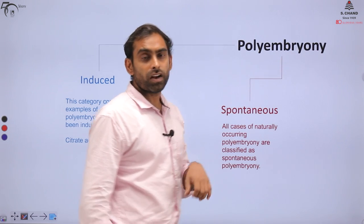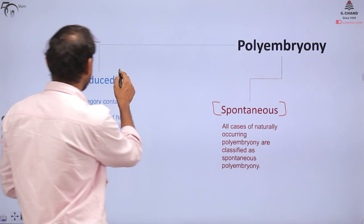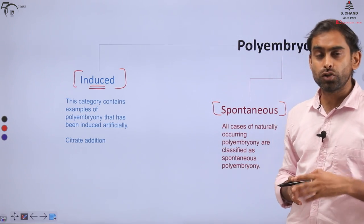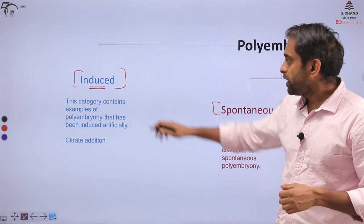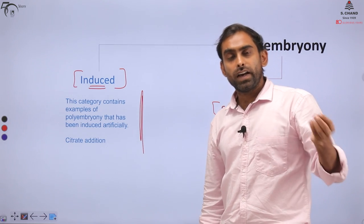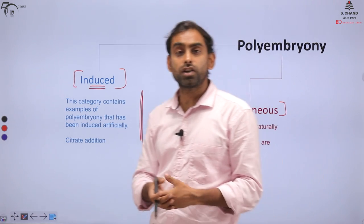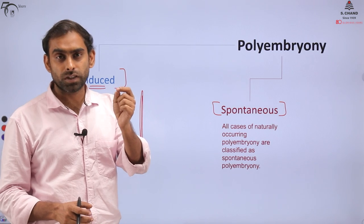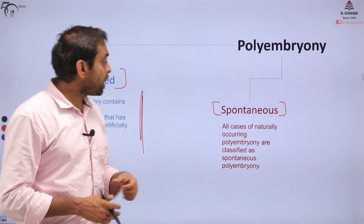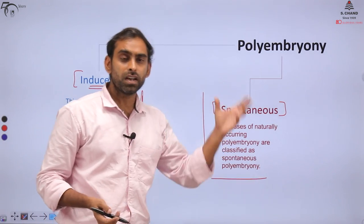We can classify polyembryony into spontaneous and induced types. Induced polyembryony will not happen by itself — it is induced by external factors. The first documented case of polyembryony was in citrus fruits, particularly orange and lemon, and that was an example of spontaneous polyembryony.